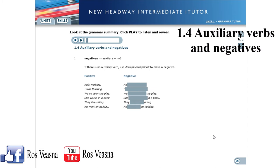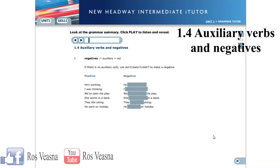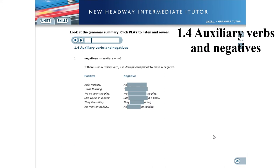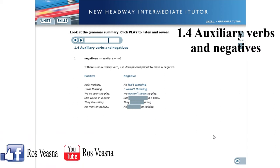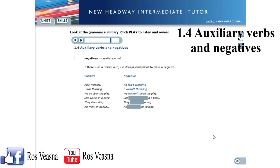1.4 Auxiliary verbs and negatives. To make negatives, we use the auxiliary verb with not or n't. If there is no auxiliary verb, we use don't, doesn't, or didn't to make a negative form. He's working / He isn't working. I was thinking / I wasn't thinking. We've seen the play / We haven't seen the play. She works in a bank / She doesn't work in a bank. They like skiing / They don't like skiing. He went on holiday / He didn't go on holiday.